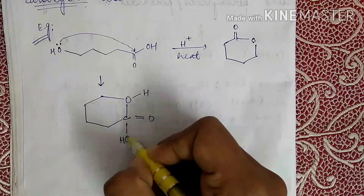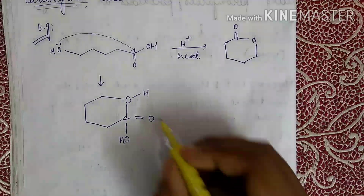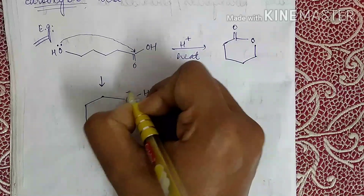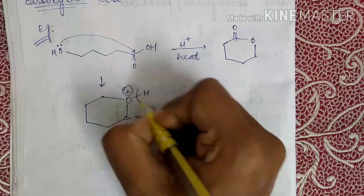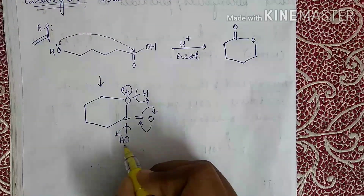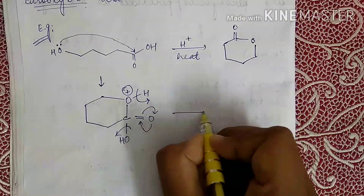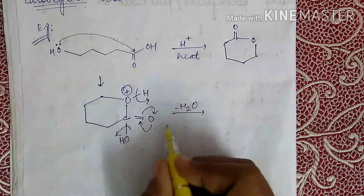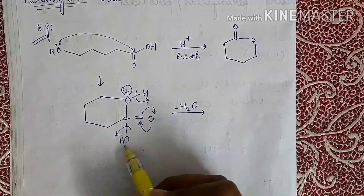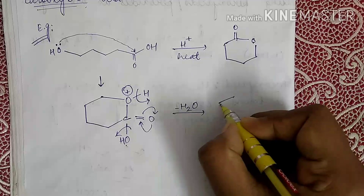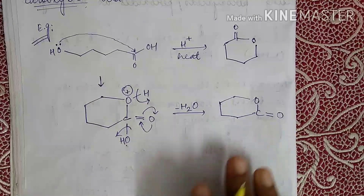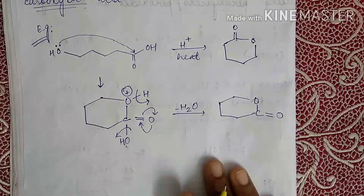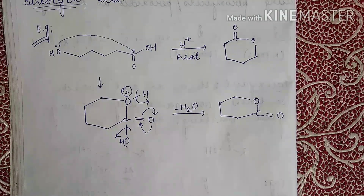Since the carbon would be five-coordinated, there is a rapid removal of water — H and OH are simultaneously removed — leading to the formation of the required lactone. This is how lactones are prepared in general. Now we will see the preparation of lactones from cyclic ketones with the help of Baeyer-Villiger rearrangement or oxidation.